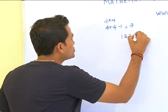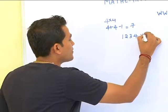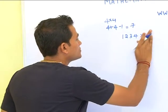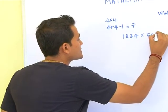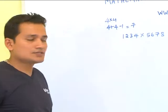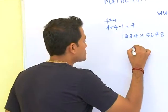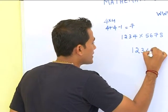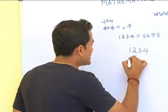Let's say you have 1234 multiplied by 5678. As in the physical shortcut, you write the numbers one below the other.